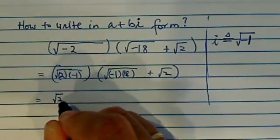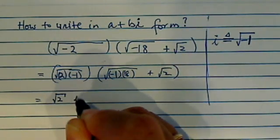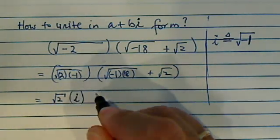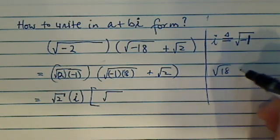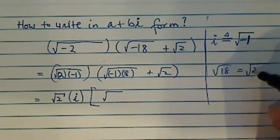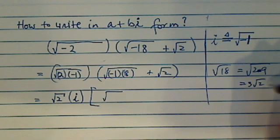So here I have radical 2 times i, because radical minus 1 by definition is i, times radical of 18. Radical 18 is 2 times 9, so this is really 3 radical 2.